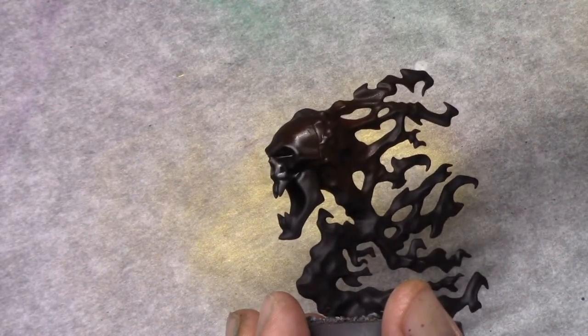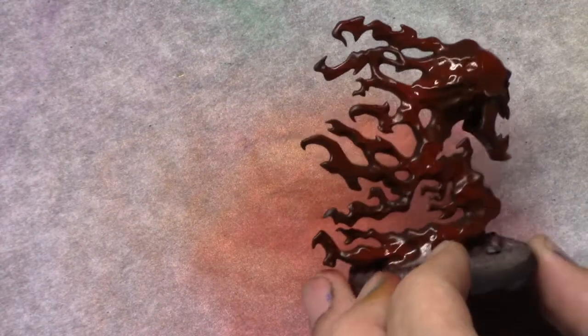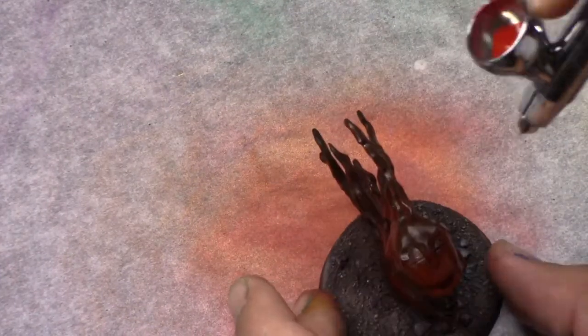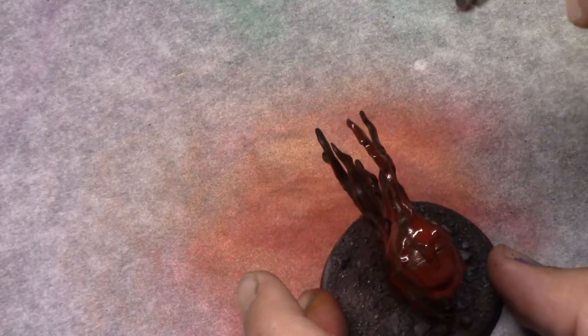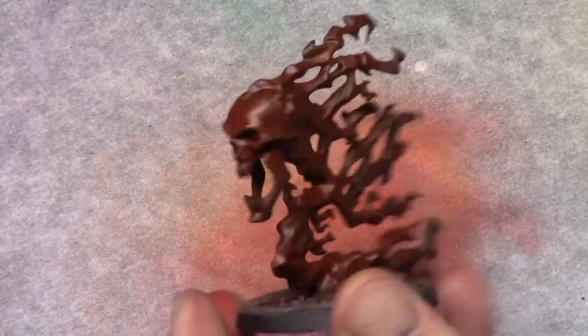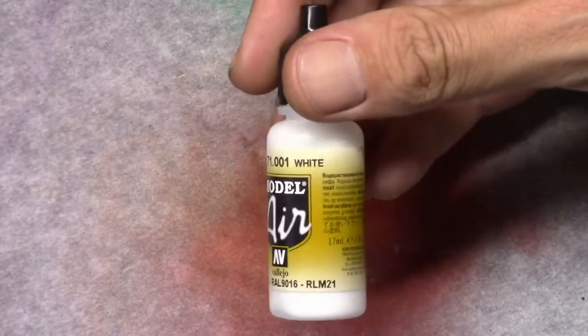As usual I start off with a base coat of Chaos Black through a rattle can, and then through an airbrush I used Fire Red and just coated the entire model with it. You won't get a really vibrant red as you can see, but that's the plan.